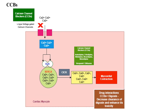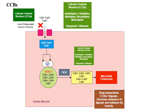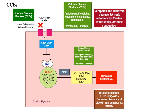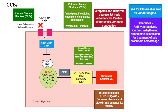Some calcium channel blockers like the phenylalkylamines act on the heart and not on blood vessels — such as verapamil and diltiazem. Verapamil and diltiazem decrease SA node automaticity, cardiac contractility, and AV node conduction. All calcium channel blockers are used for both classical and variant angina.